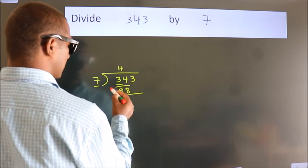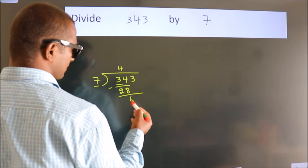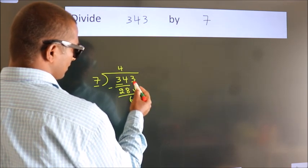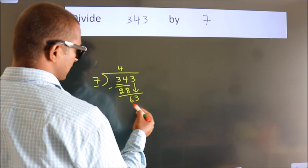Now we should subtract. We get 6. After this, bring down the beside number. So 3 down. So 63.